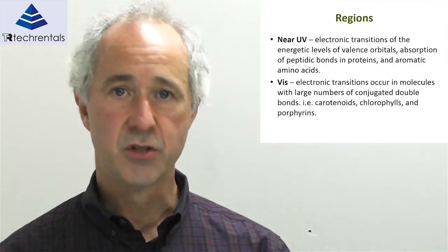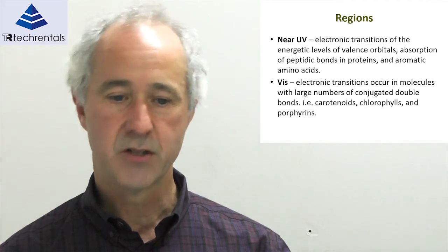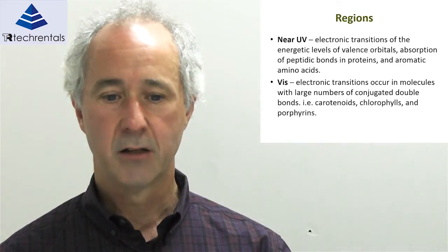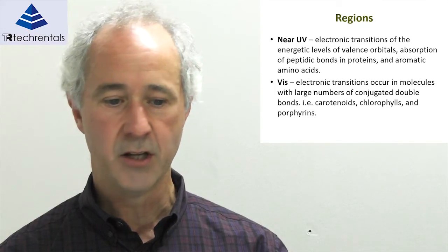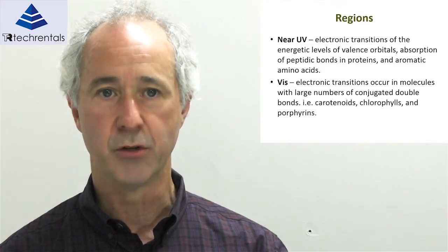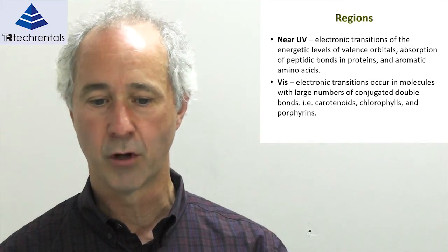Depending on the spectral region, materials interact differently. In near UV spectroscopy, electronic transitions are the predominant absorption of energy, and this can be used for measuring peptide bonds in proteins and aromatic amino acids. Moving into the visible spectrum, we're looking at electronic transitions in molecules, which can be used for carotenoids and measurement of chlorophylls. We've used that successfully to measure the chlorophyll levels of fruit.